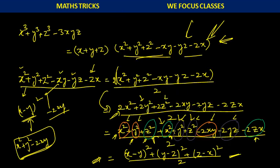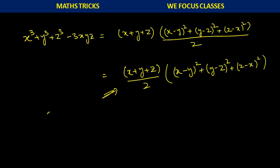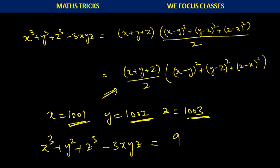Let us see one more example. If x equals 1001, y equals 1002, and z equals 1003, find x cube plus y cube plus z cube minus 3xyz. Since 1001, 1002, 1003 are consecutive terms, your answer is simply 9 into the middle term, which is 9 times 1002.